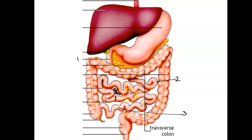So we have the duodenum, jejunum, and ileum. The ileum feeds into the cecum — a dead-end area of the large intestine where we think it begins. Then you have the ascending colon, which does a right turn called the right colic flexure. Then the transverse colon, and then another turn called the left colic flexure. Then the descending colon and then the sigmoid — notice how it's kind of like an S — the sigmoid colon coming in to the rectum.